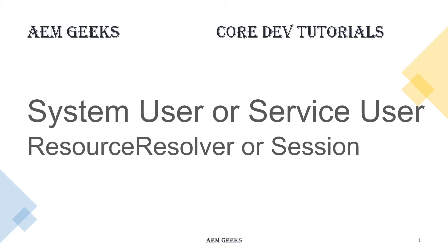In this tutorial I will discuss about system or service users and how to get a resource resolver using them. System or service users are a specific kind of users present in AEM which perform their operations with least or minimum permissions for the bundle they are mapped to. They cannot be used for normal AEM login, they have only the permissions needed to perform their operations, and they are always mapped to a particular bundle.